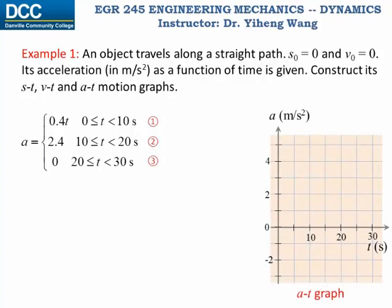The a-t graph is the easiest to sketch since the function is given. For the time period 0 to 10 seconds, we sketch the first equation a equals 0.4 times t — a linear function — up to t equals 10 seconds. For 10 to 20 seconds, we sketch a equals the constant 2.4, a horizontal line. For 20 to 30 seconds, we sketch a equals zero, another horizontal line. You can connect the time periods with dashed lines, but the actual function graph does not include those. That completes the a-t graph.